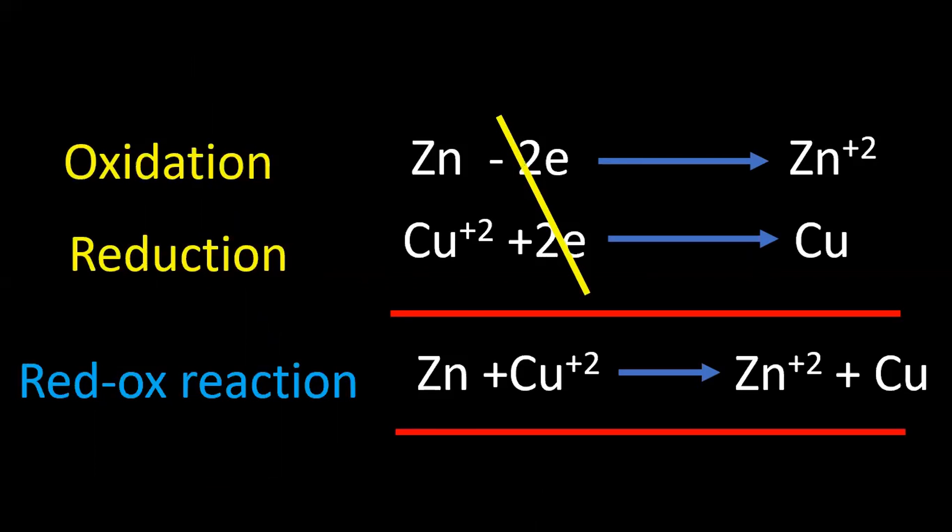Adding the two reactions, electrons get cancelled. You get this net reaction. This is the redox reaction.